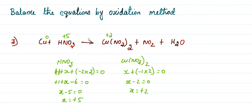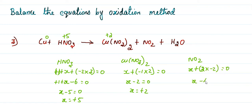Next, nitrogen in NO₂. NO₂: nitrogen oxidation number x, with oxygen 2 into minus 2 equals zero, so x minus 4 equals zero, and x equals plus 4. So nitrogen oxidation number in NO₂ is plus 4.